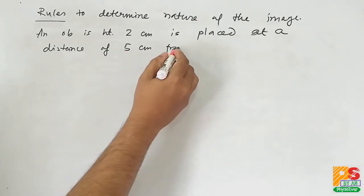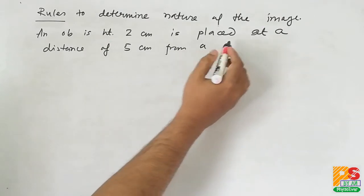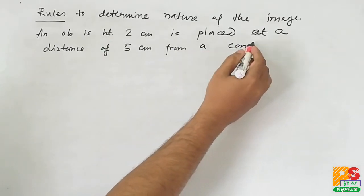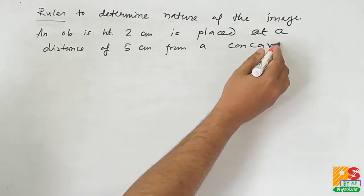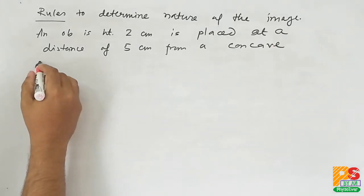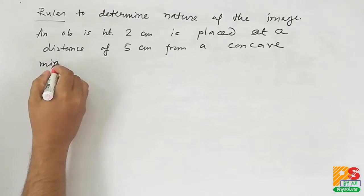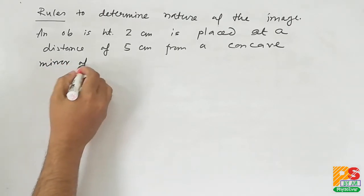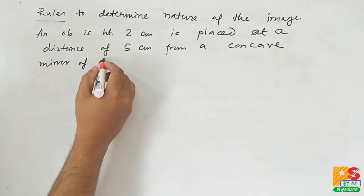The object height is 2 cm. It is placed at a distance 5 cm from a concave mirror of focal length 10 cm.